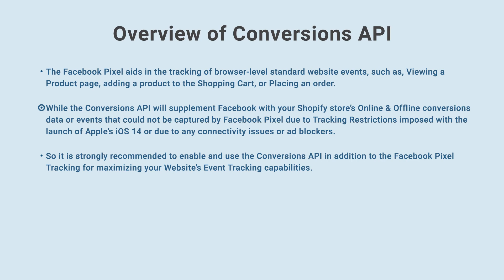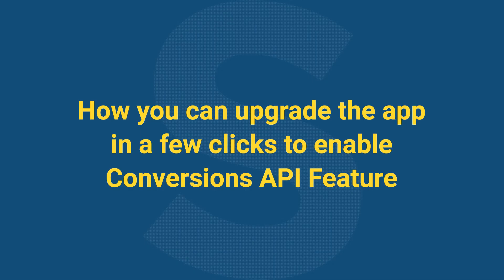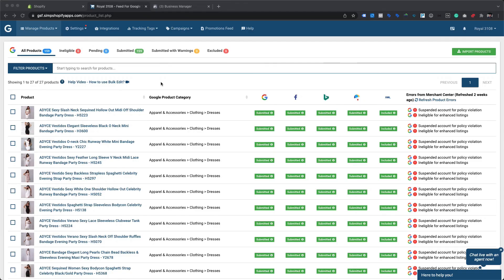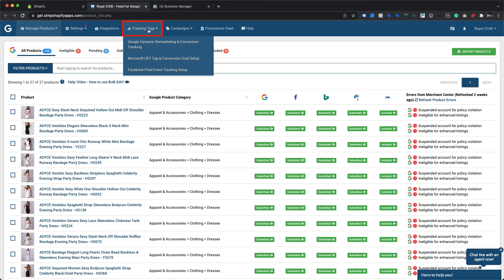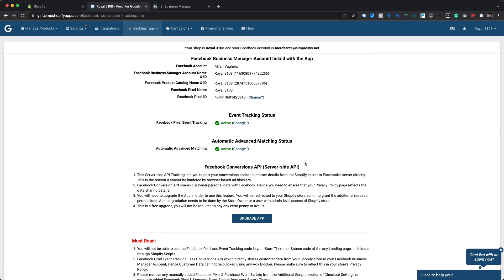The Conversions API supplements Facebook with your Shopify store's online and offline conversions data — events that could not be captured by the Facebook Pixel due to tracking restrictions introduced with Apple's iOS 14, or due to connectivity issues or ad blockers. It is strongly recommended to enable and use the Conversions API in addition to Facebook Pixel tracking to maximize your website's event tracking capabilities. To enable the Facebook Conversions API feature, hover over the Tracking Tags menu and select the Facebook Pixel Event Tracking Setup option.